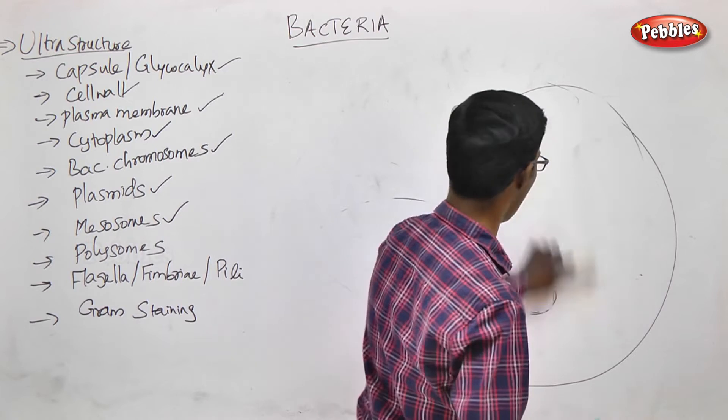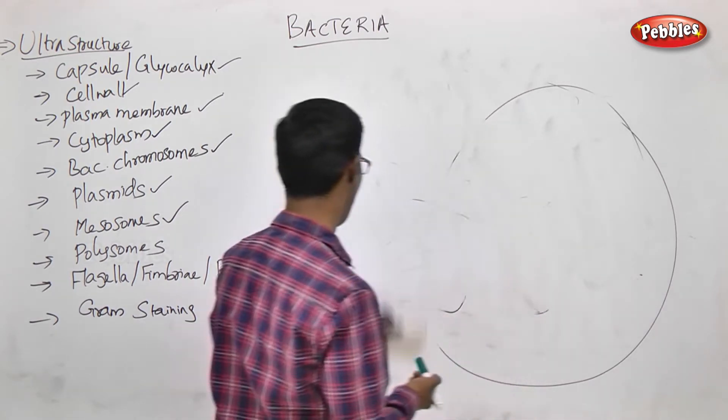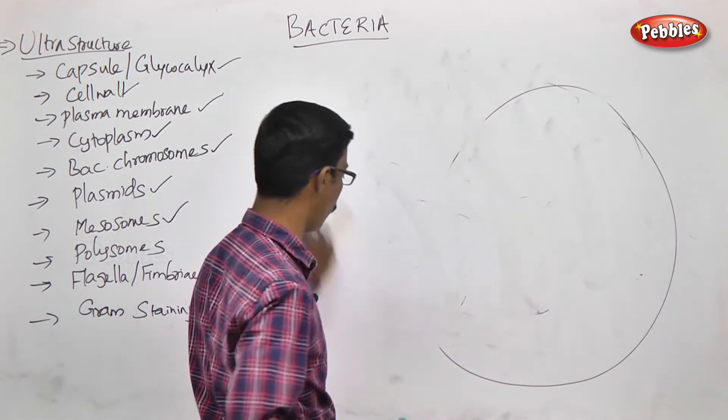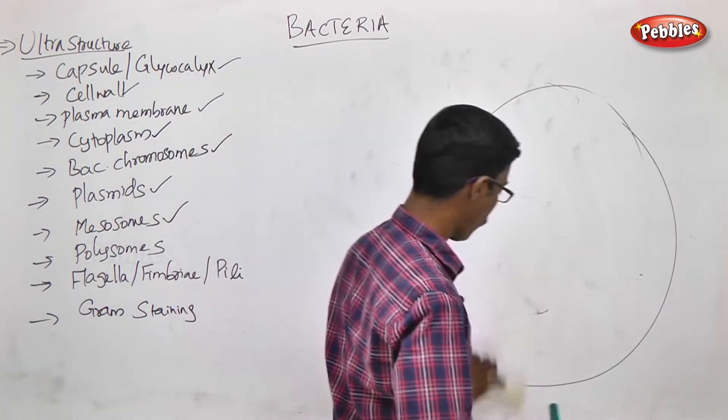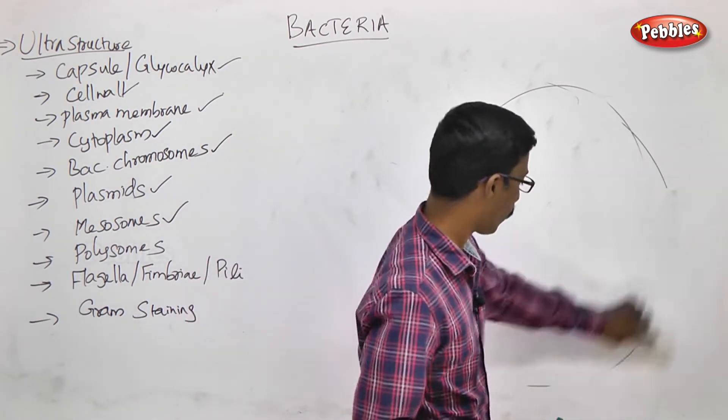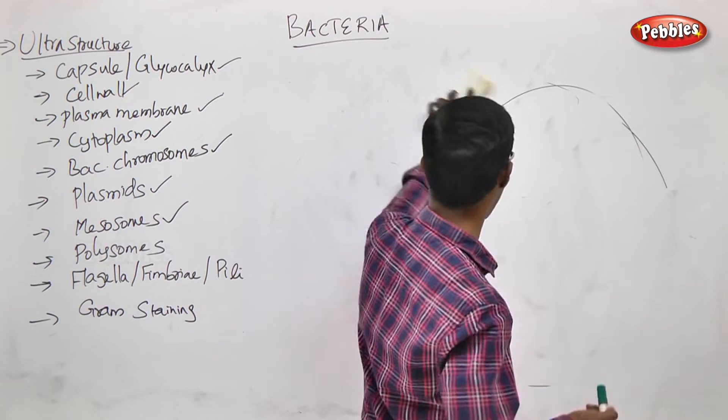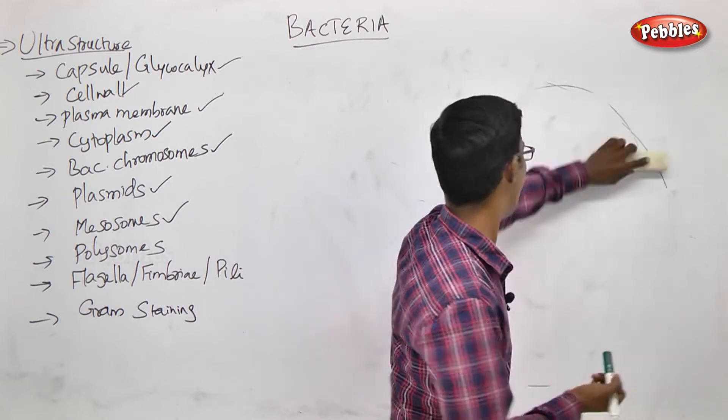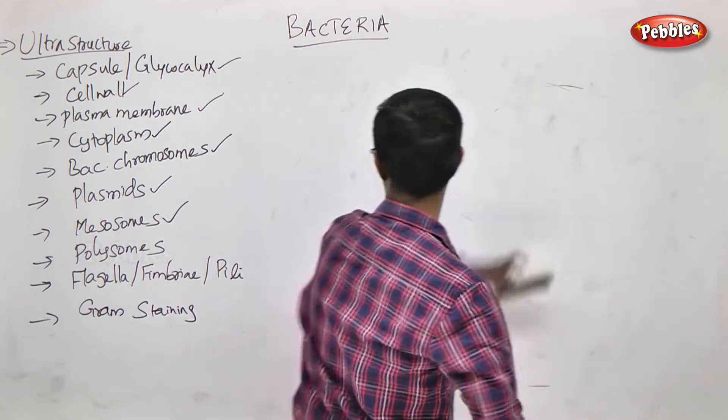That adaptation structure is called Mesosomes — the infoldings of the cell membrane of the prokaryotic cell bacteria.